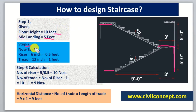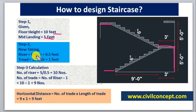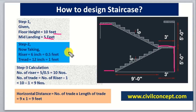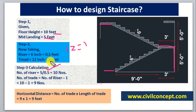In Step 2, we take the riser height as 6 inches. You can also take 7 inches or 5 inches. I am taking the tread width as 12 inches — you can also take 10 inches. So 6 inches equals 0.5 feet, since 12 inches make 1 foot. The tread is 12 inches, which equals 1 foot.